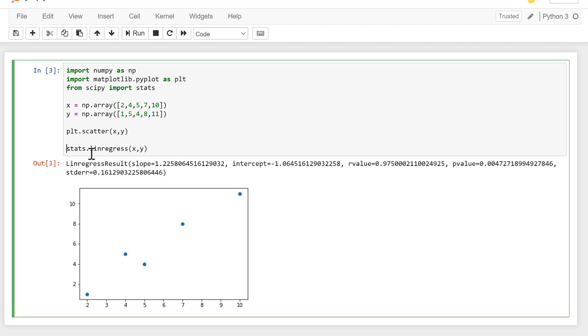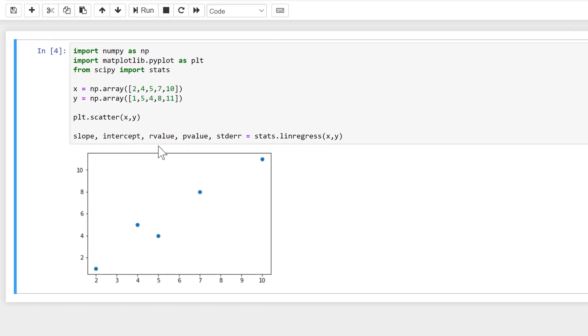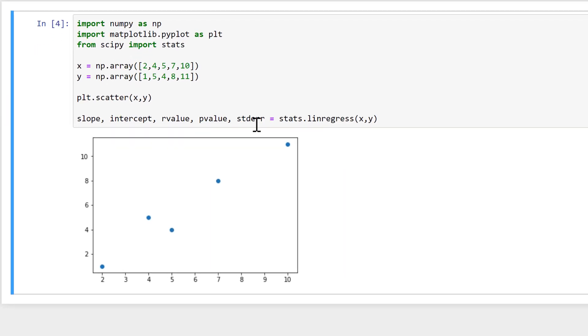Now we want to take these five results and put them into separate variables, so we'll have the slope, the intercept, the r value, the p value, and the standard error. Now when I run this, the results don't show up this time because they're all being fed into these values.